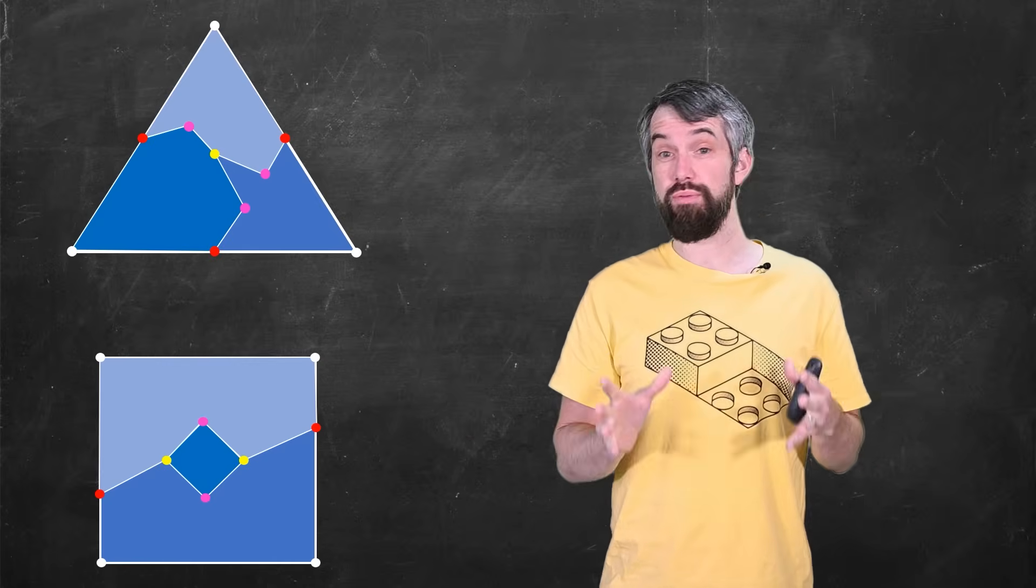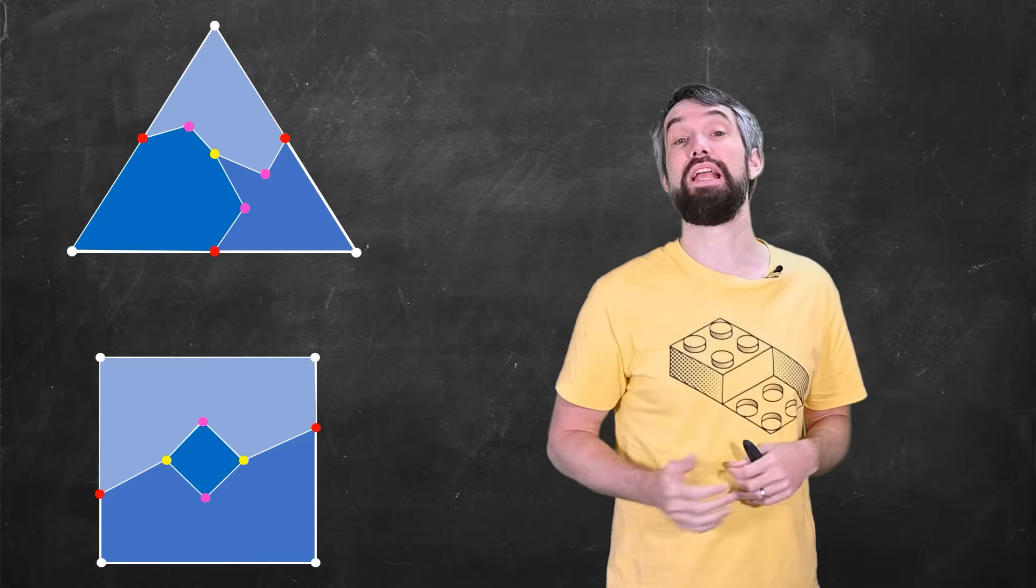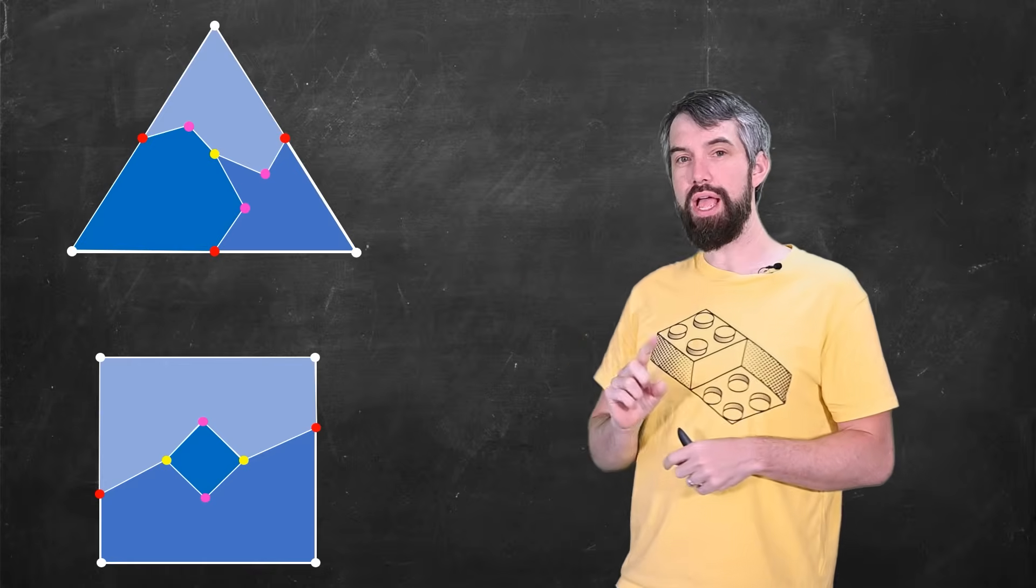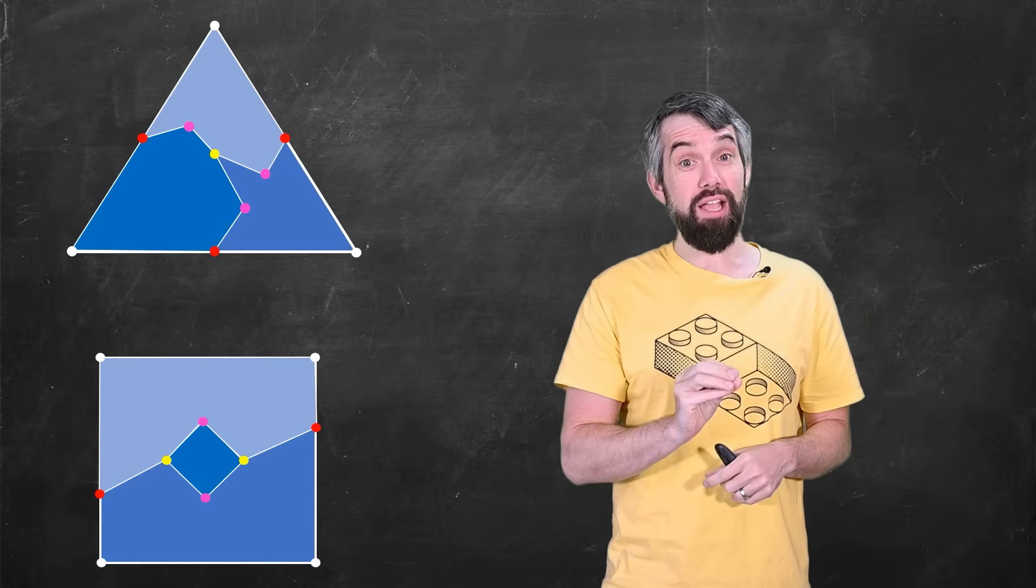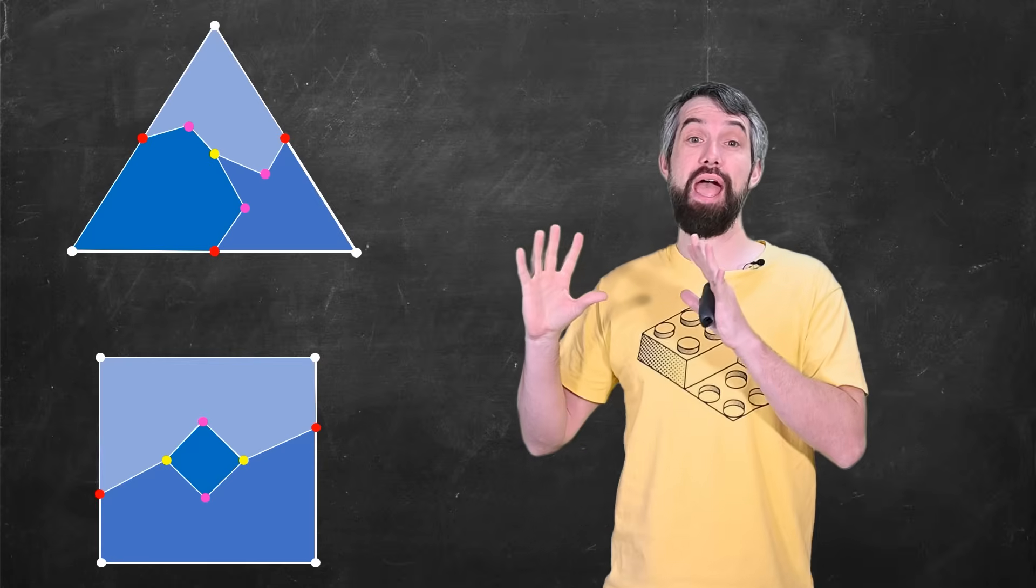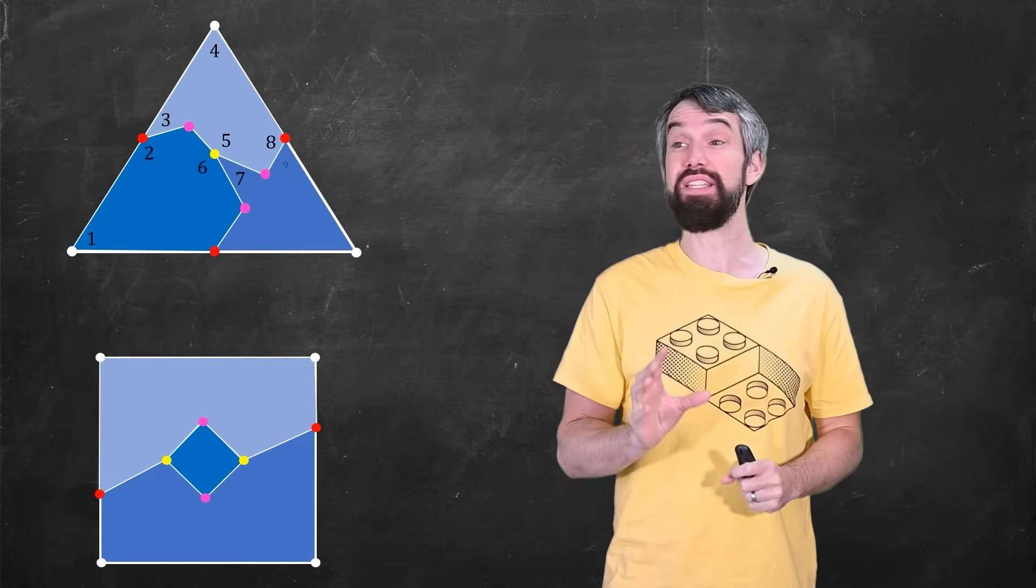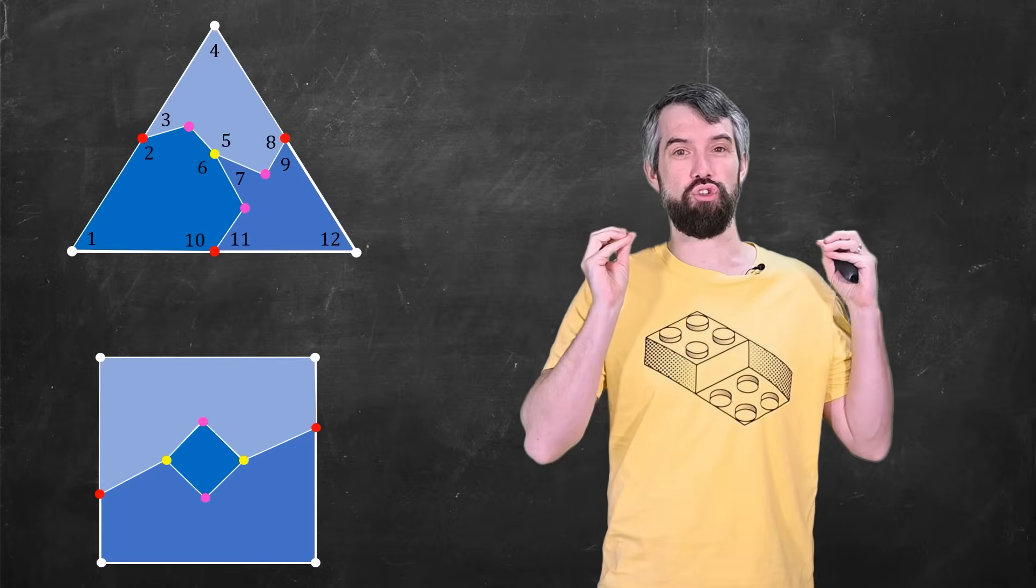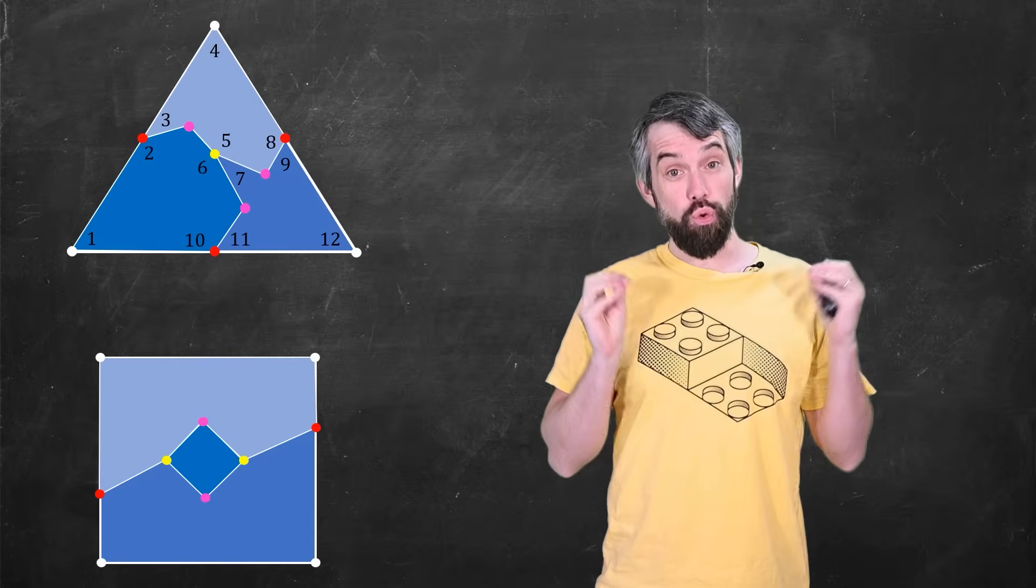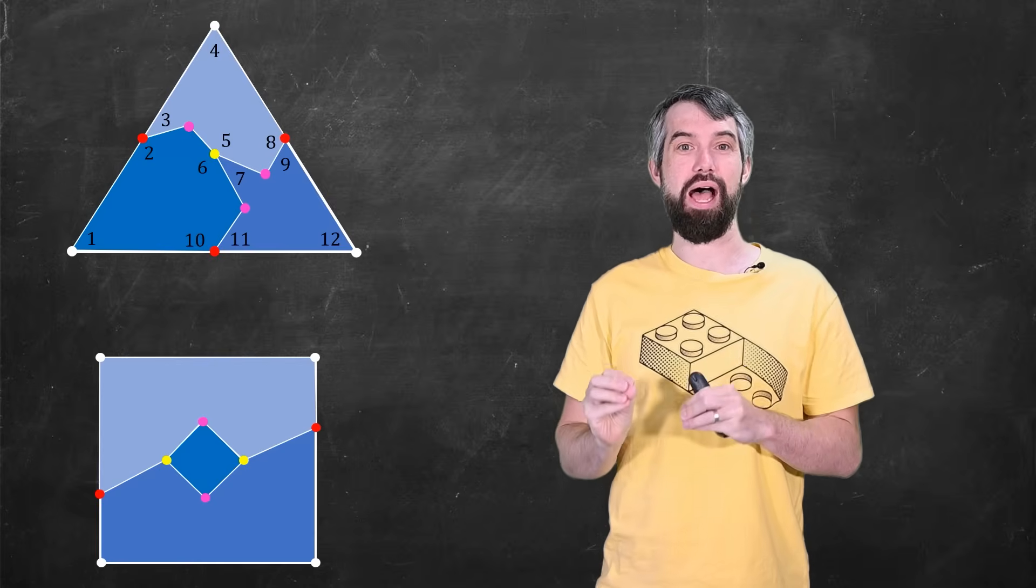Now one way the paper rejects things is by counting angles. So let's look at the triangle and let's count all of the angles which are less than pi. So if I go through here, I see 1, 2, 3, 4, 5, 6, 7, 8, 9, 10, 11, and 12. There's 12 angles which are less than pi showing up here.